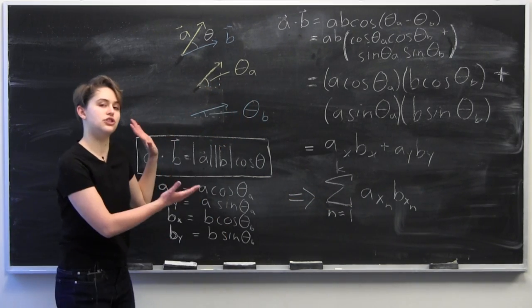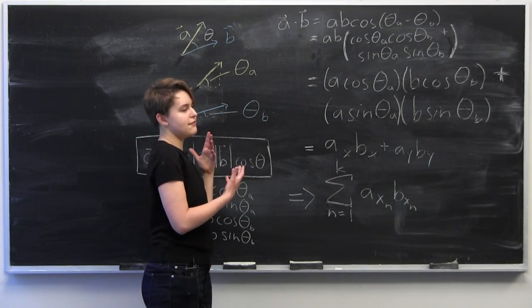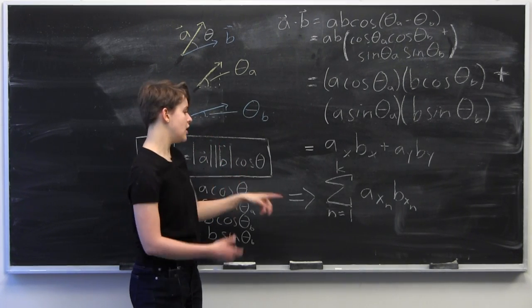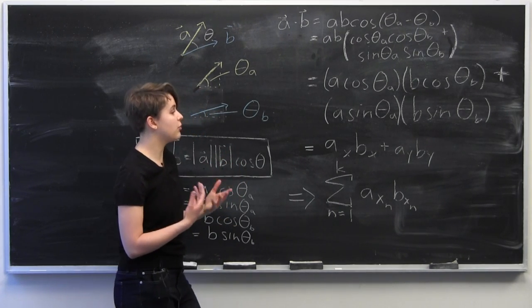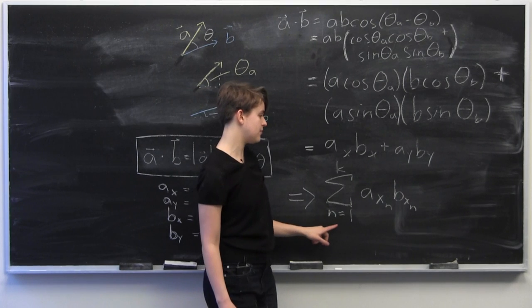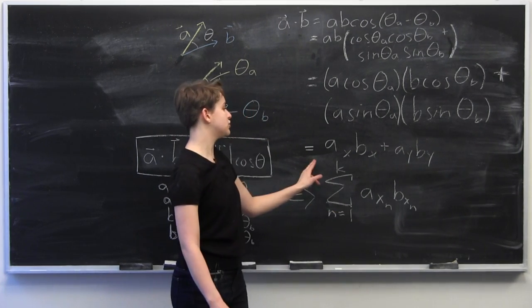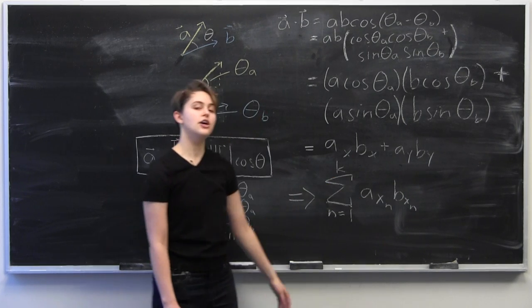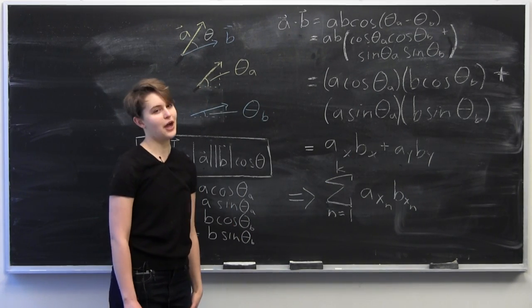This example is just in two dimensions, but we can generalize this into any vector of k elements using the following formula, which is the algebraic interpretation of the dot product, which is the sum from n equals 1 to k of a_n times b_n, which is just a generalization of what you see here. So that's just a simple proof of the dot product. Thank you for commenting.